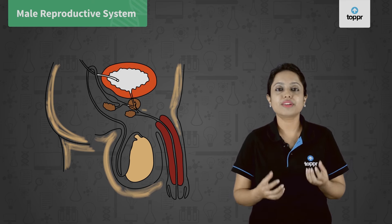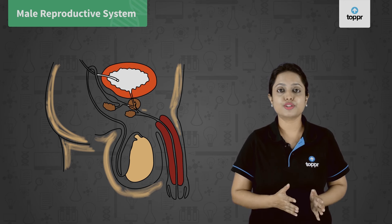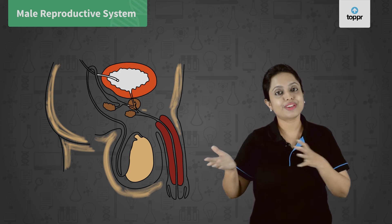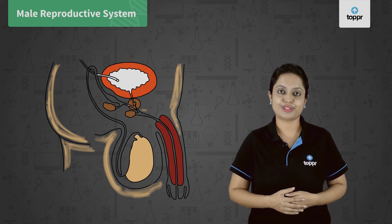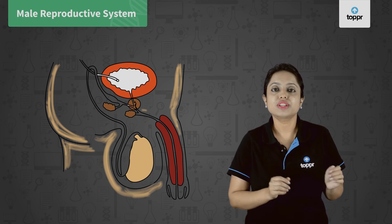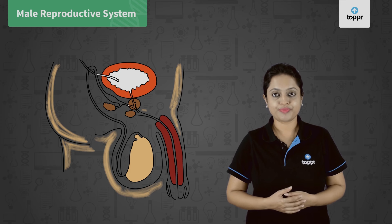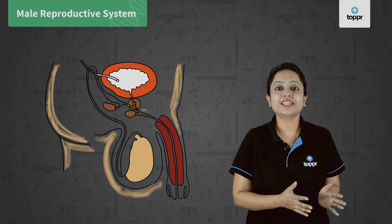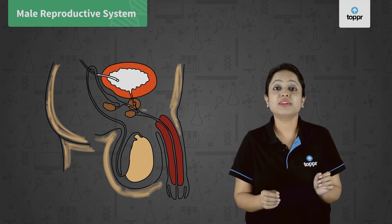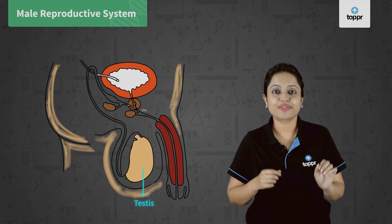Now let's discuss the male reproductive system. The main function of the male reproductive system is to produce the germ cells or sperms and to transfer them to the female reproductive system. Based on these functions, the male reproductive system is made up of two types of organs: primary reproductive organs and accessory male reproductive organs. The primary male reproductive organ is the pair of testes.